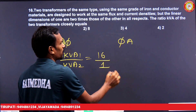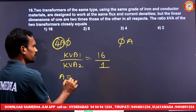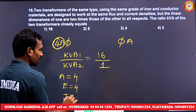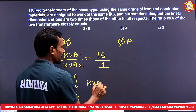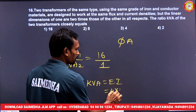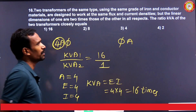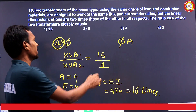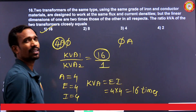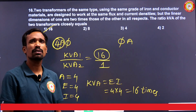When linear dimensions are increased by two times, area becomes four times, so EMF becomes four times and current becomes four times. KVA = voltage × current = 4 × 4 = 16 times. So when linear dimensions are doubled, the KVA rating increases by 16 times. This is your answer. These are a few questions on EMF equations.